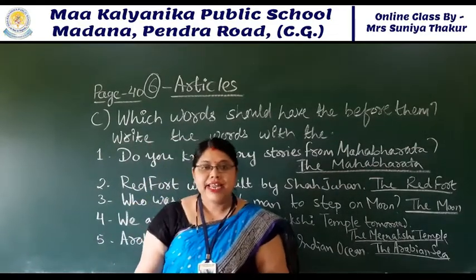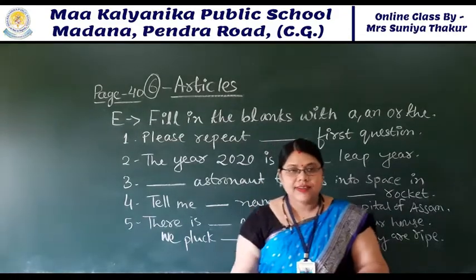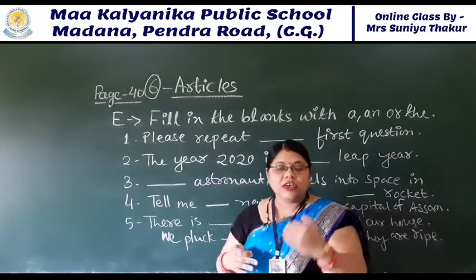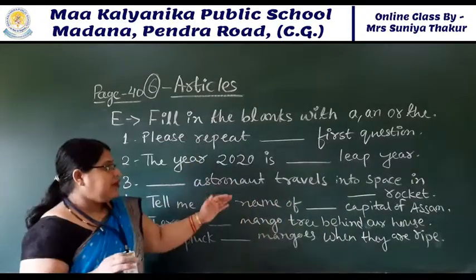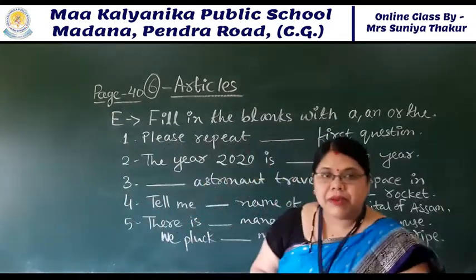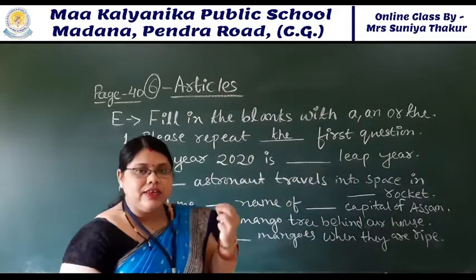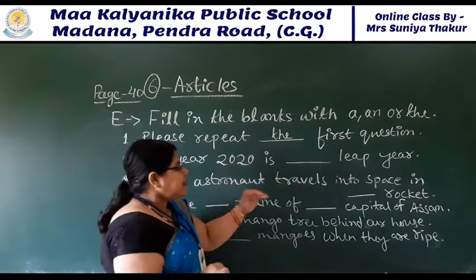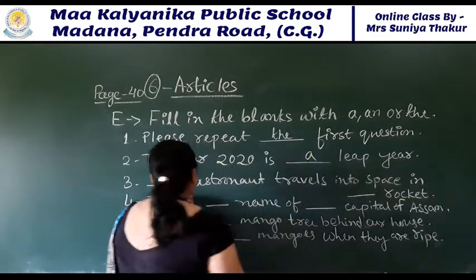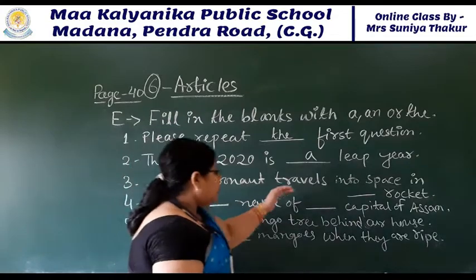Now look at the next number, number E - filling in the blanks with A, AN, or The. Students, in the first section we discussed the uses of A and AN, and in the second section we discussed the uses of The. Now all three will be used wherever needed. Please repeat the first question. The year 2020 is a leap year. An astronaut travels into space in a rocket.